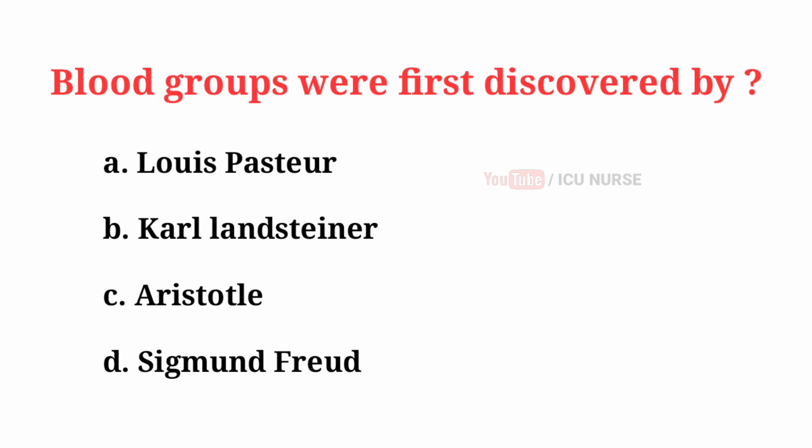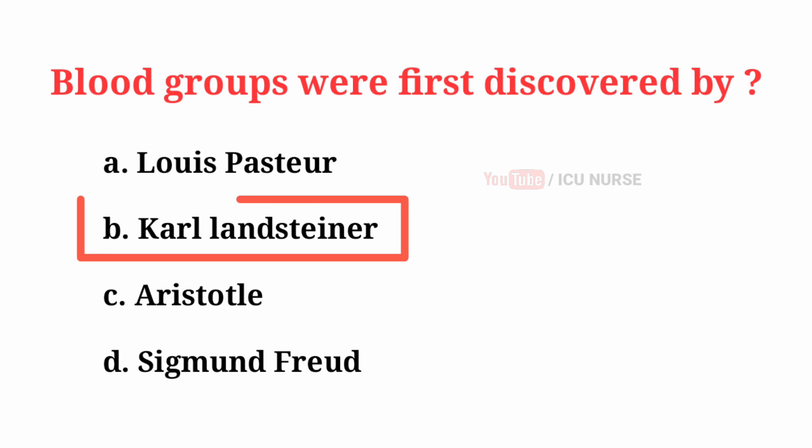Blood groups were first discovered by — the correct answer is B: Karl Landsteiner.